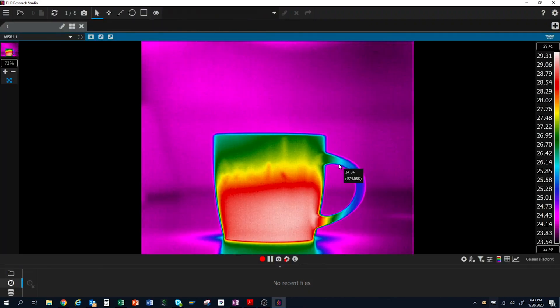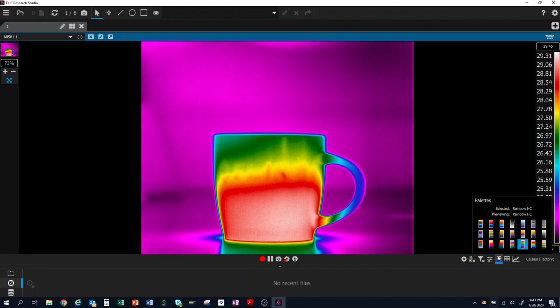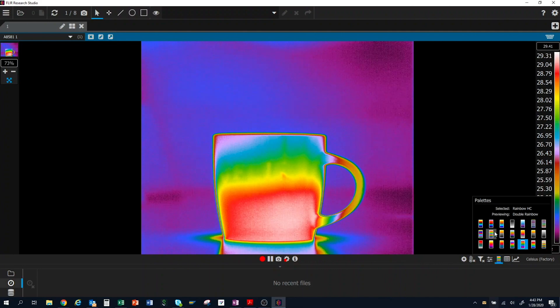Once connected, I'll have a live thermal image displayed in Research Studio and be able to control all the camera parameters. This includes auto and remote focusing when using motor focus lenses and control of the internal four-position filter wheel.